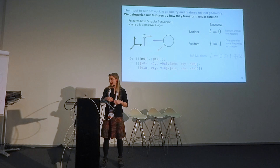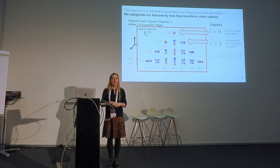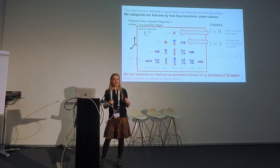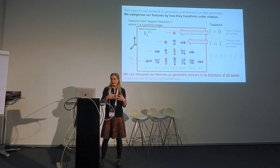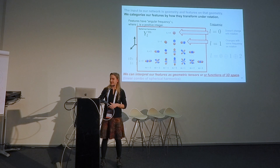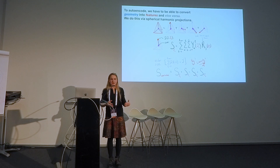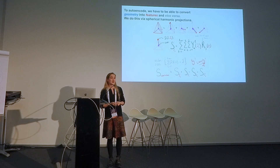There's a connection with the spherical harmonics: our filters are spherical harmonics, and our features can be thought of as attached to spherical harmonic functions. Our features can be interpreted as things like vectors, energies, and so on, or as functions of 3D space — literally linear combinations of spherical harmonics. This is the key thing for creating our autoencoder: to auto-encode, we need to be able to turn geometry into features, and we do this using spherical harmonic projections.